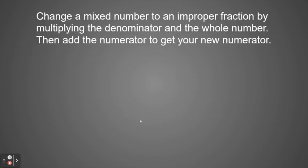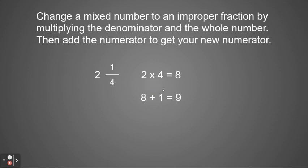I'm going to show you another way that you can do this. You can change a mixed number to an improper fraction by multiplying the denominator and the whole number, and then adding the numerator to get your new numerator. In that same equation where we had two and one fourths, I'm going to start by multiplying my whole number times my denominator. So two times four equals eight. Now I'm going to add eight — my product — to my numerator. Eight plus one equals nine. Nine is going to become my new numerator, so two and one fourth is equal to nine fourths. All I have to do is multiply my denominator times my whole number and then add my numerator.